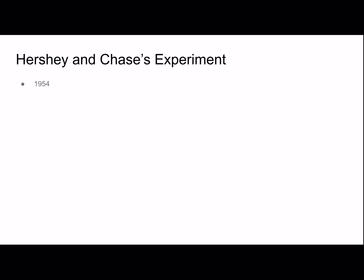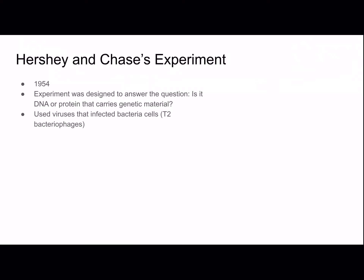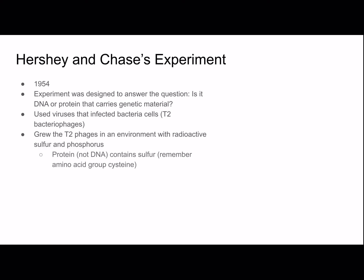Hershey and Chase's experiment was in 1952, and it was designed to answer the question: is it DNA or is it protein that carries genetic material? They used viruses that infected bacteria cells, specifically T2 bacteriophages — viruses that infect bacteria. They grew the T2 phages in an environment with radioactive sulfur and phosphorus. Because protein, not DNA, contains sulfur — remember the amino acid cysteine — and DNA, not protein, contains phosphorus.